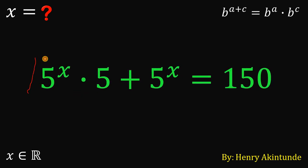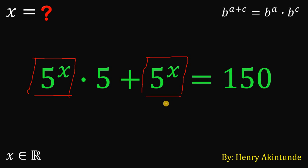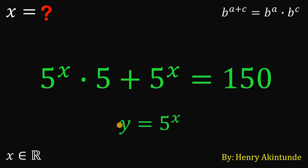Now, whenever we see similar terms like this — we have b raised to x and b raised to x — what we're going to do is replace this with another variable to make the equation simpler. So, let's replace b raised to the power of x with another variable and call it y. Therefore, we replace all instances of 5 raised to the power of x with the variable y.